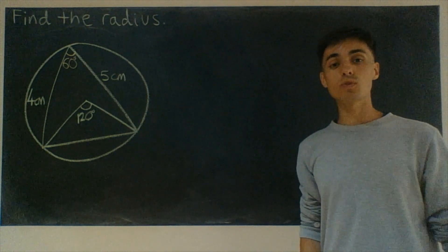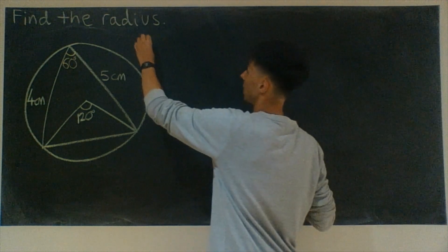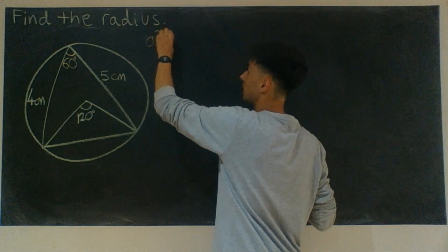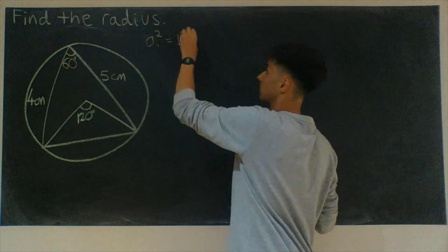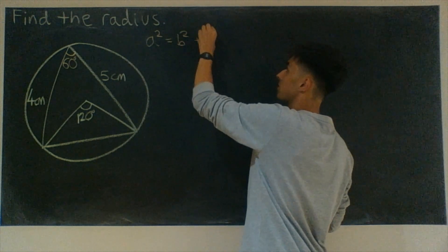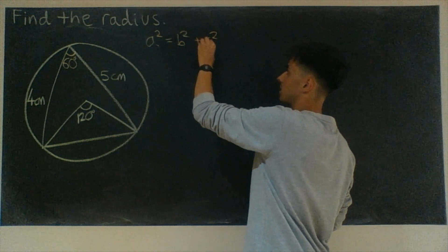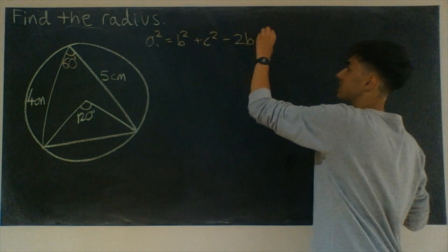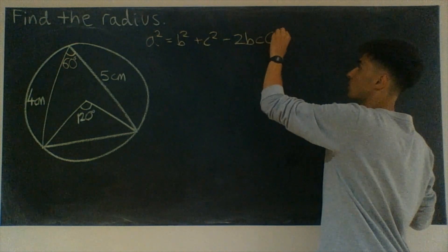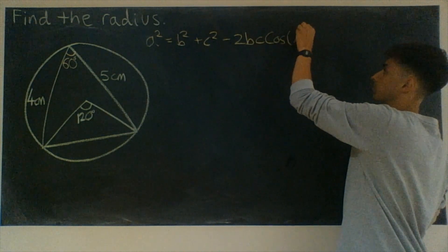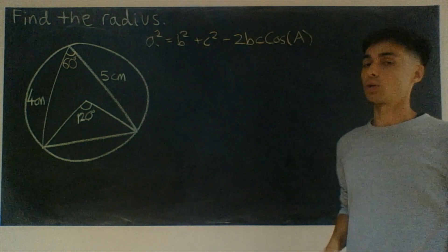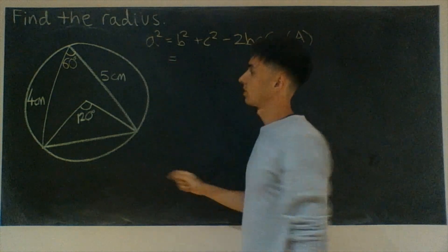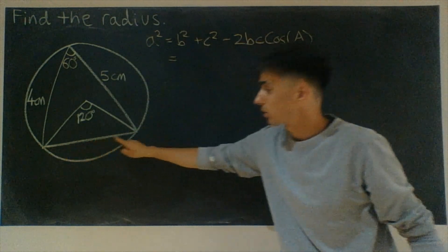So let's first of all write down the cosine rule, and then we're going to apply it. So the cosine rule is this: a² = b² + c² - 2bc cos(A). Well, we're going to use this to find our a². That's this bottom side. We're going to call it a.